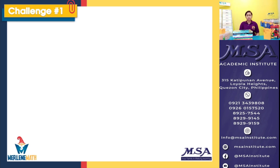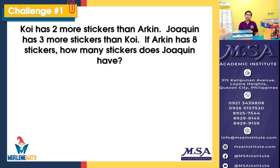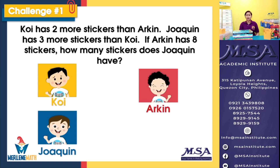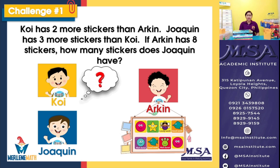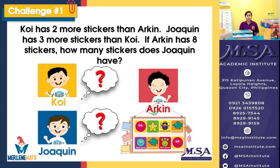Challenge problem number one — you may read it with me. Koi has two more stickers than Arkin. Joaquin has three more stickers than Koi. If Arkin has eight stickers, how many stickers does Joaquin have? With this challenge problem, we know that there are three kids: Koi, Arkin, and Joaquin. We know that Arkin has eight stickers, but for both Koi and Joaquin, we are clueless. How many stickers do you think do they have? We will be able to find out later.